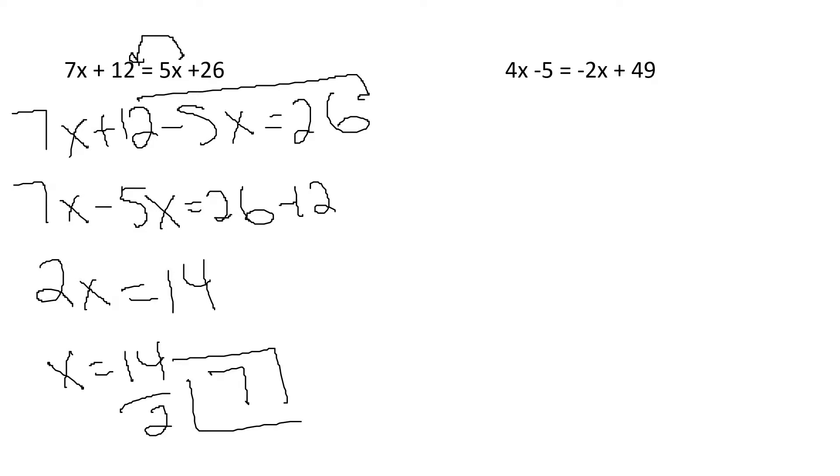Same thing here. I'm going to move my 2x over. That minus is going to become a plus. Now I'm going to move my minus 5 over. When I move the minus over, it's going to become a plus. Simplify things. I get 6x equals 49 plus 15 is 64.